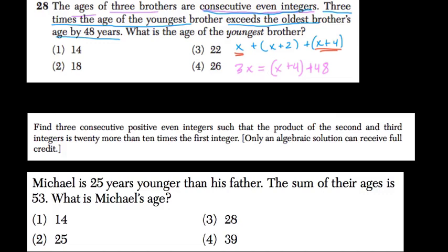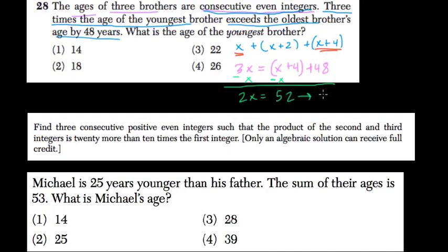Now we can solve for x. Subtract x from both sides — these parentheses aren't really doing anything here. Subtract x and what do we get? 2x equals 4 plus 48, or 52. Then divide both sides by 2, and x equals 26.